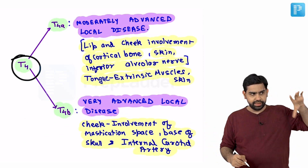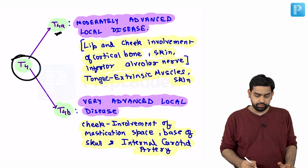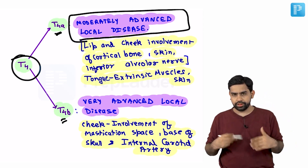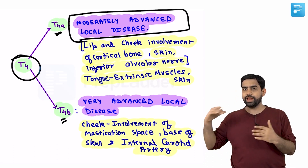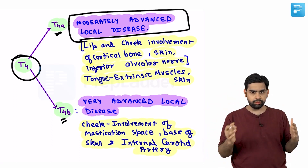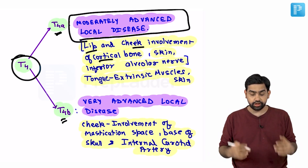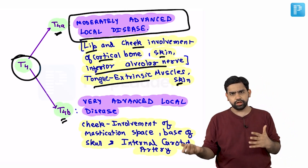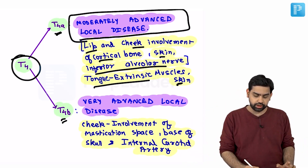T4 is subdivided into T4A and T4B. T4A is moderately advanced local disease — it involves surrounding structures which can be excised. Examples include lip, cheek, cortical bone, skin, inferior alveolar nerve, or extrinsic tongue muscle involvement. If the tongue is involved, we can do a glossectomy; if the mandible is involved, we can do a mandiblectomy.